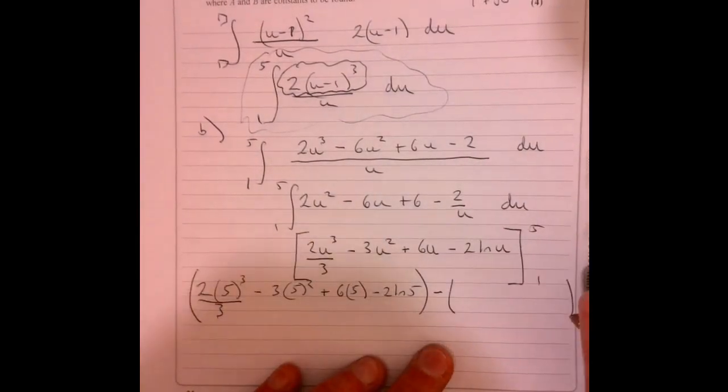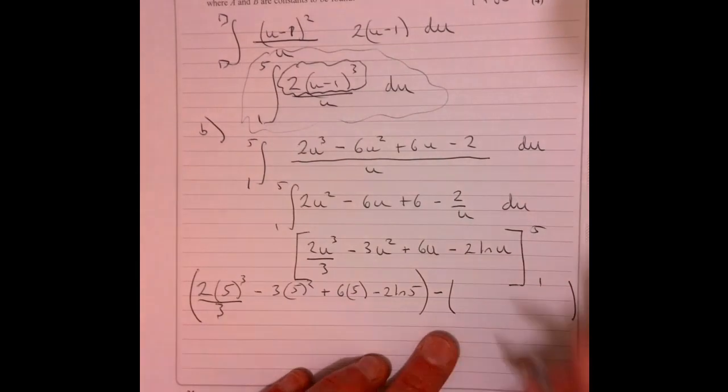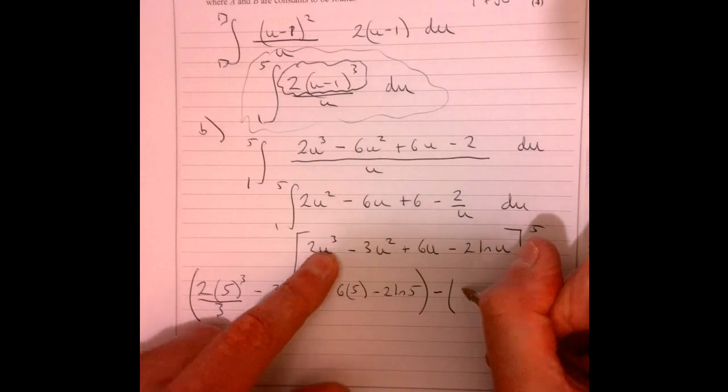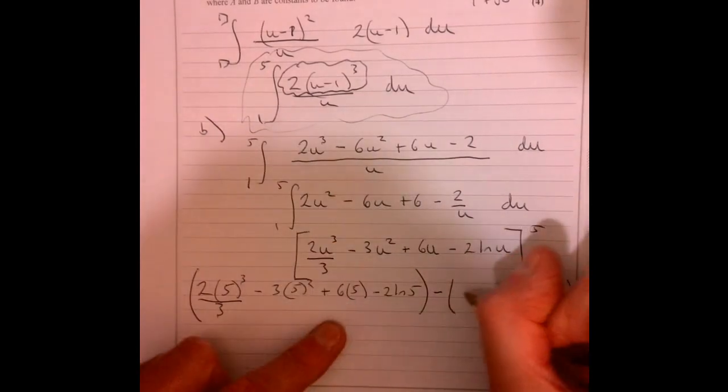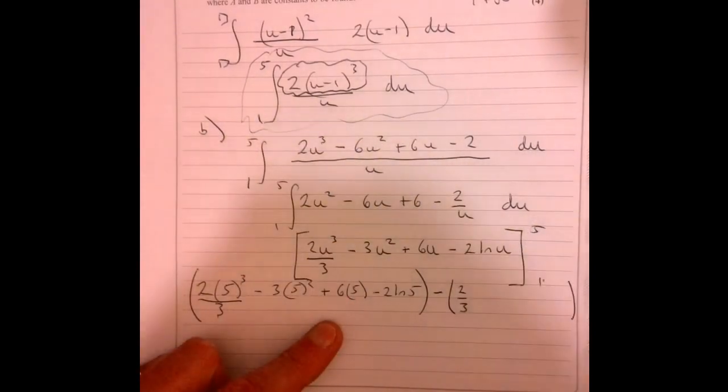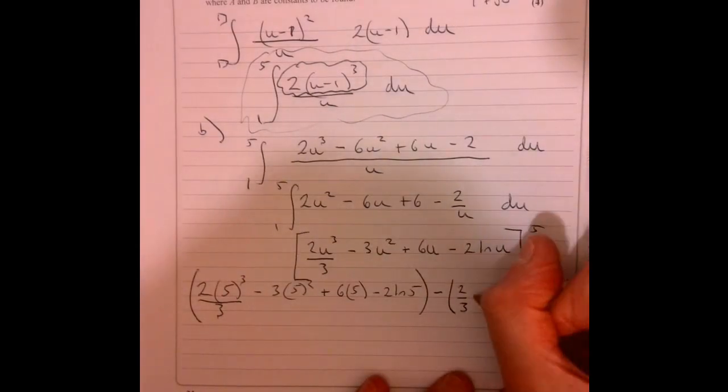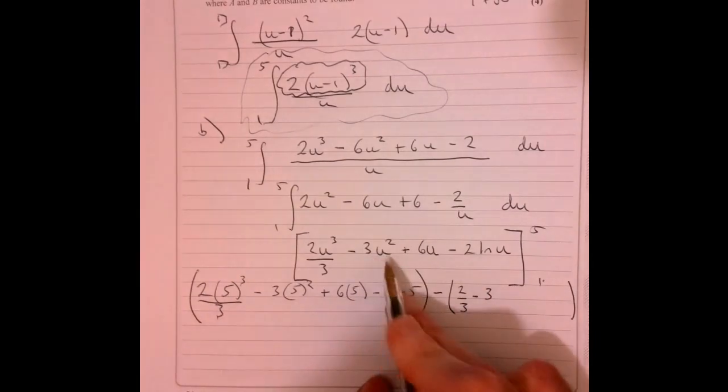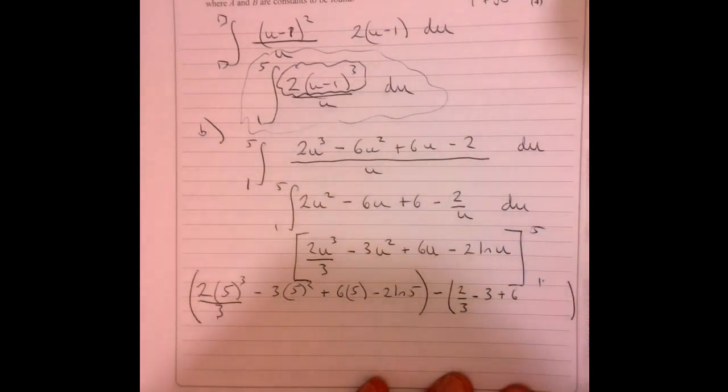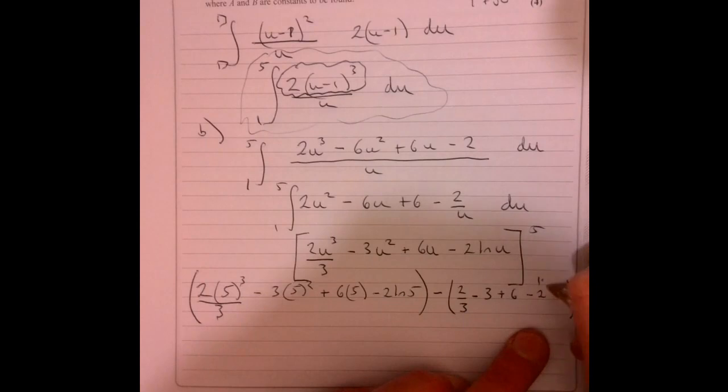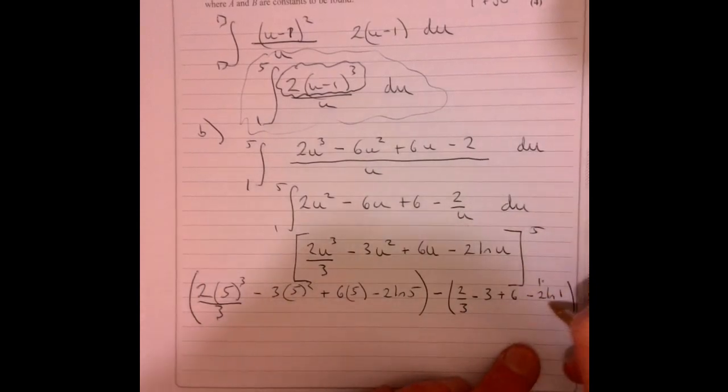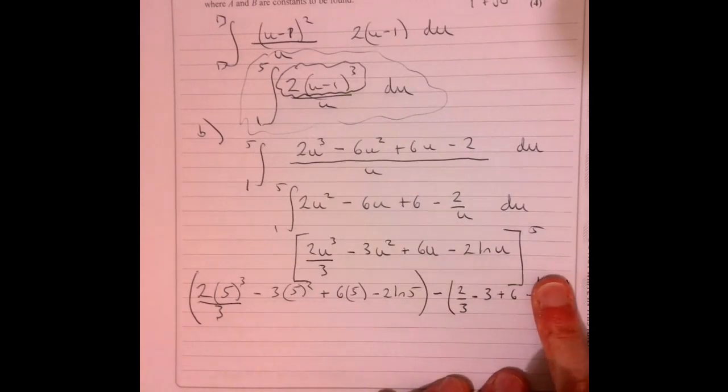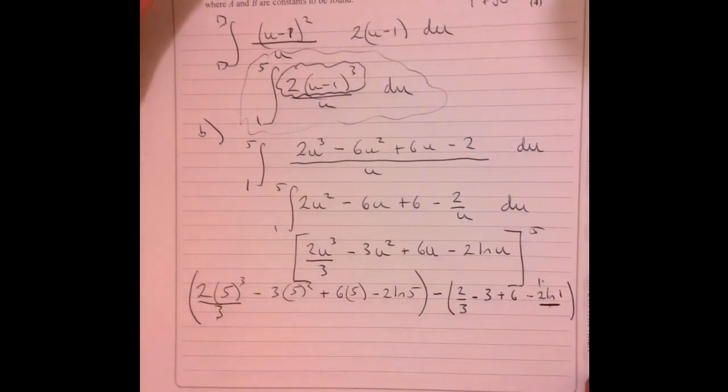And I'm going to take away when I'm going to sub in 1. So that's a little bit easier to sub in, isn't it? Because that's just 2 thirds. It goes u to the power of 3. That's 1 to the power of 3. That's just 1, isn't it? So I can do this as I go. I'm going to do 5. So minus 3 plus 6 and minus 2 ln 1. Well, that's 0 because ln 1 is 0. So that bit, that's just going to disappear. I'm happy with that.